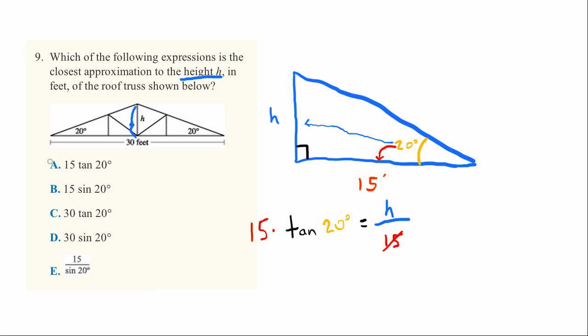And that is the correct answer A. So the important part about this question is memorizing the meaning of tangent, which is the side opposite from the angle divided by the side adjacent to the angle in a right triangle.